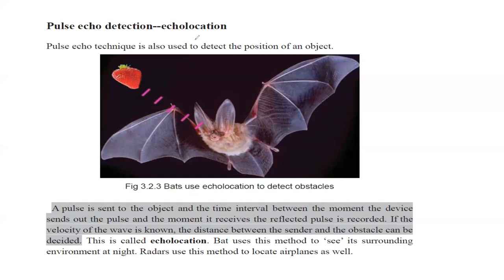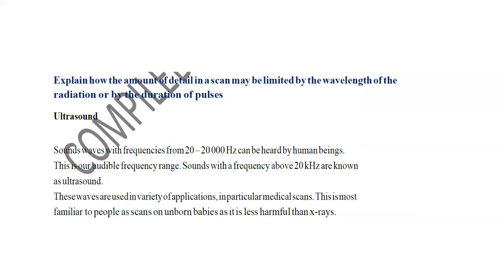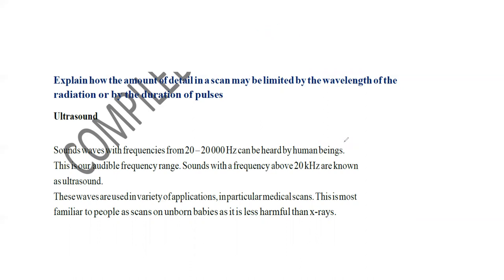The amount of detail in a scan can be limited by the wavelength and the duration of the pulse. We can send a longer pulse or a shorter pulse in terms of time interval. Sound waves with frequencies from 20 Hz to 20,000 Hz are audible to humans. Sound with frequency above 20,000 Hz is called ultrasound.